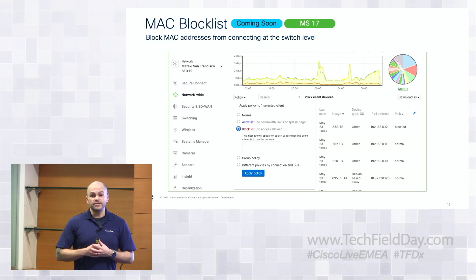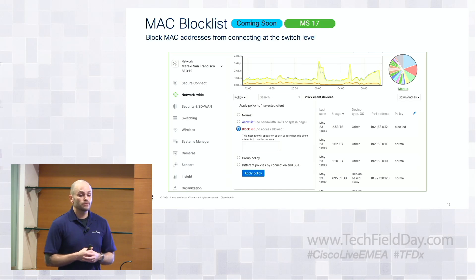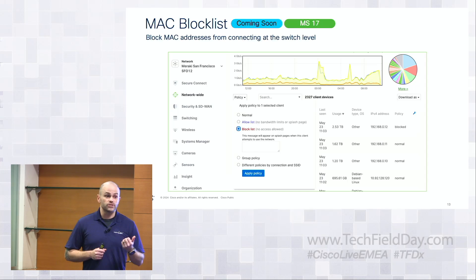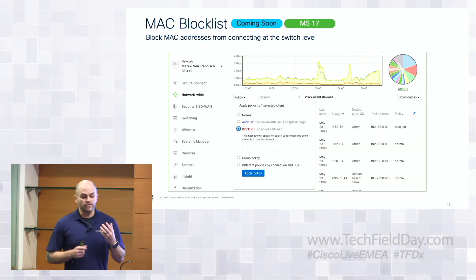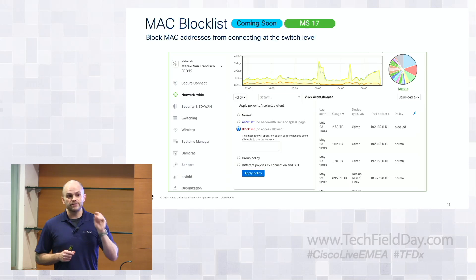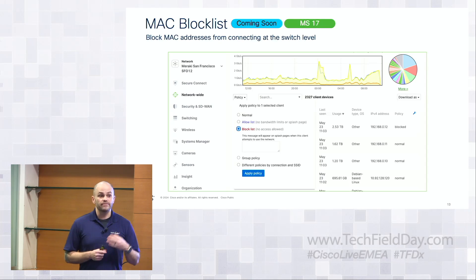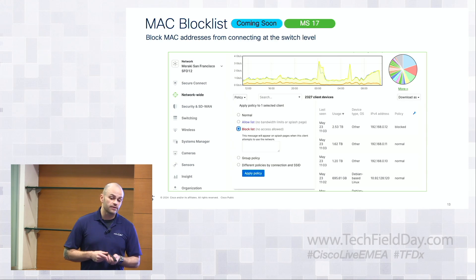With MS17 we're also bringing MAC block lists. This seems like a trivial feature, but we wanted to make sure we did it the same way we support MAC block lists with our wireless and MX products. If you've worked with dashboard, you can select a client and block them really quickly. We're going to leverage that same concept and the same APIs — so if you have workflows built to automatically block misbehaving clients, you'll be able to tie right into that with MS17.